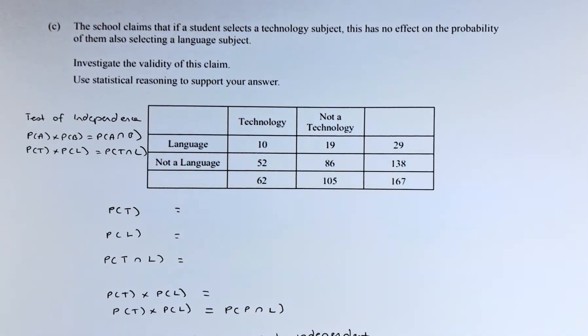The school claims that if a student selects a technology subject, this has no effect on the probability of them also selecting a language subject. Investigate the validity of this claim. Use statistical reasoning to support your answer.